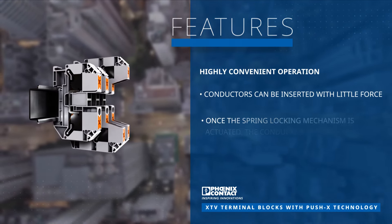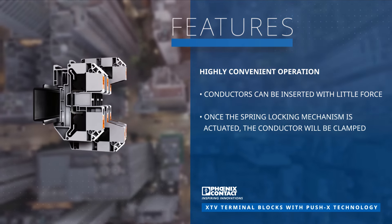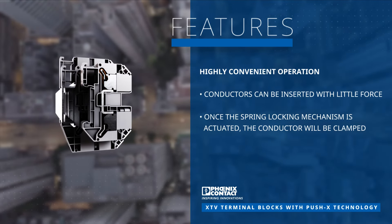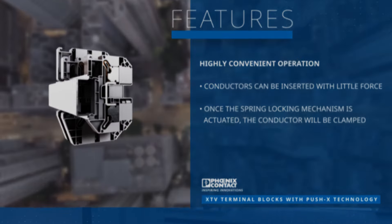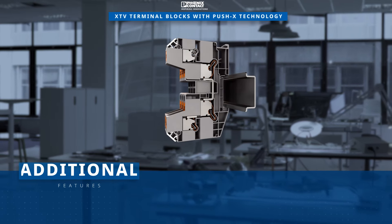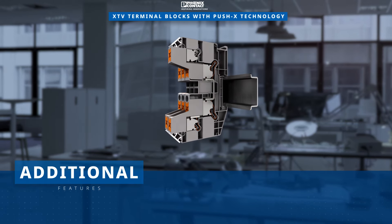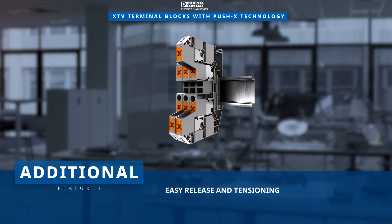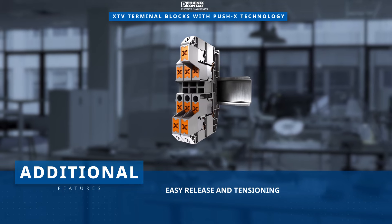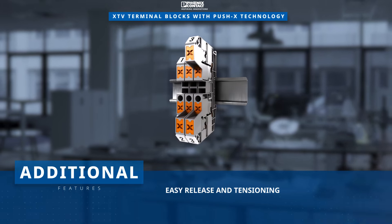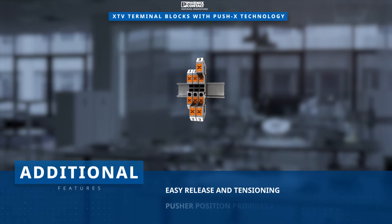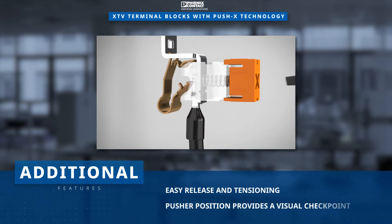A fast, effortless conductor connection is made via the pre-tensioned contact spring. Once actuated, the conductor is clamped into place with the contact spring. The conductor is released easily by pressing down on the orange pusher element.